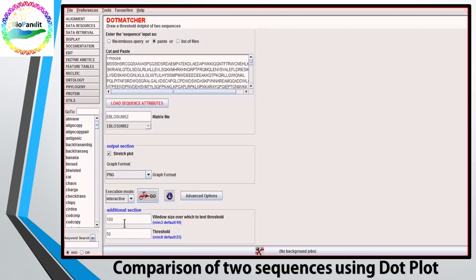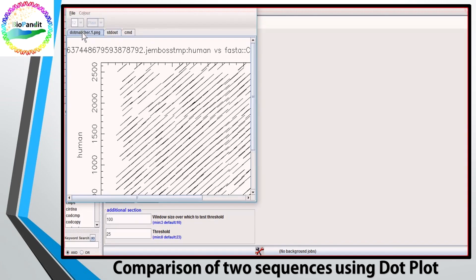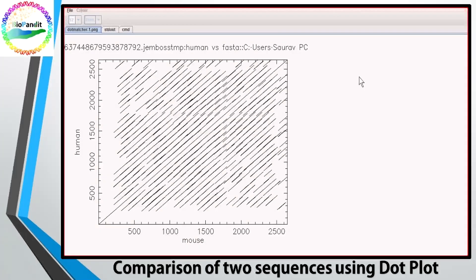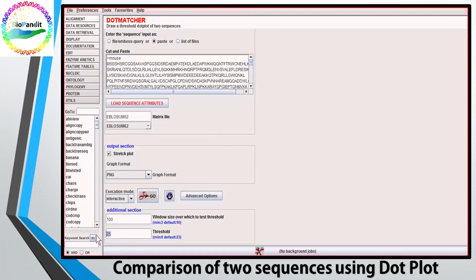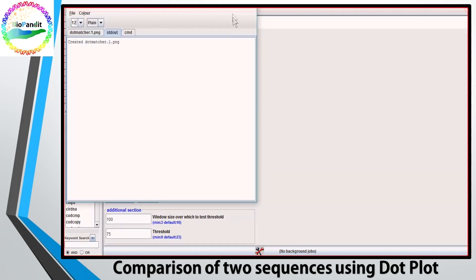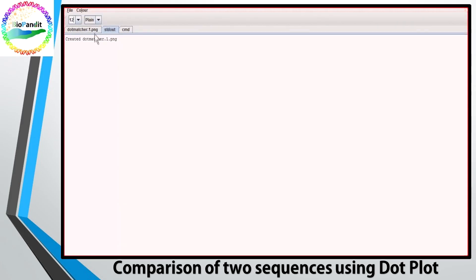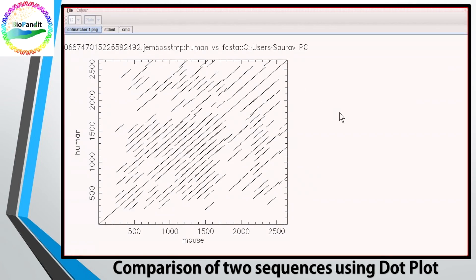Now let us reduce the identity threshold to 25%. You can see the lines are too many. Obviously, at lower identity threshold, you would always get more noisy off-diagonal lines. If you just elevate the identity threshold to 75%, this noise reduces.